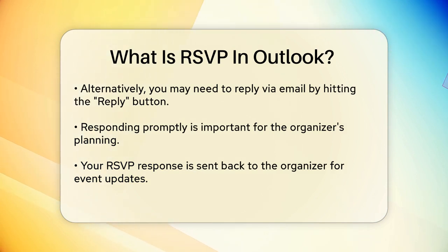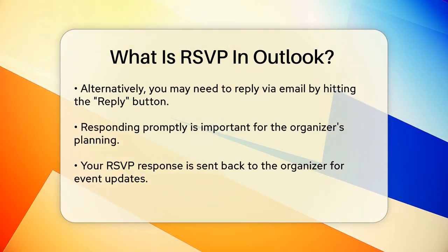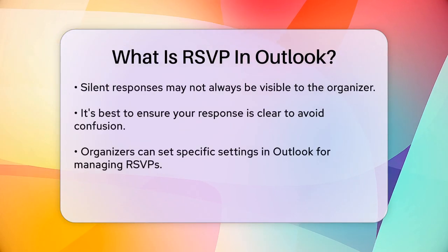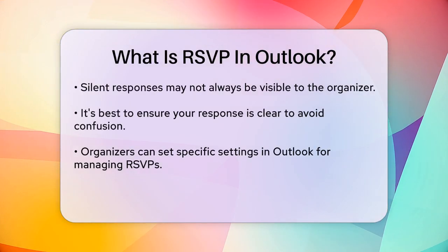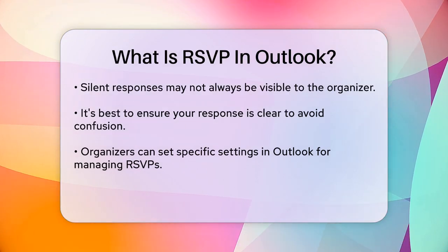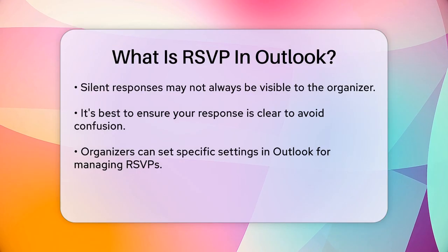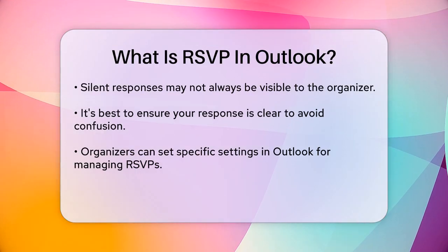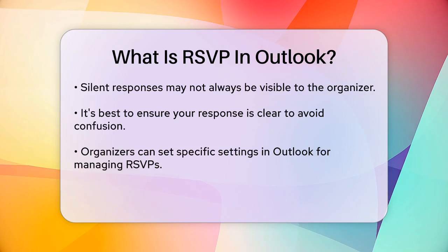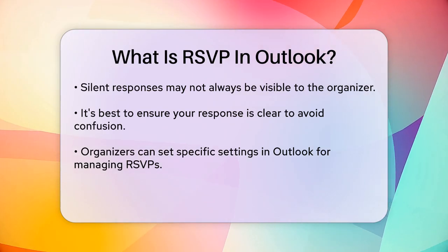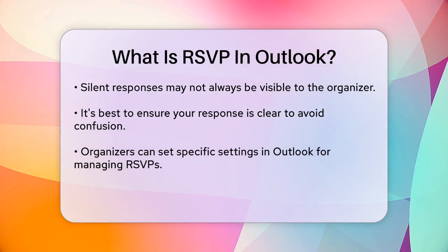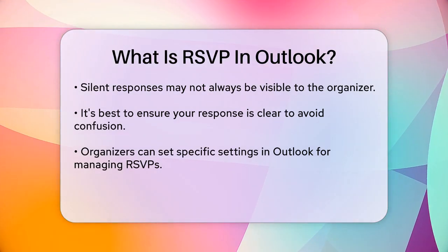In Outlook, the RSVP process is designed to make it easy for both the invitee and the organizer. When you RSVP, your response is typically sent back to the organizer, who can then update the event details to reflect your attendance status. However, there are some nuances to consider. For instance, if you choose to send a silent response — meaning you update your attendance status without sending an email — the organizer might not always see it. To avoid confusion, it's generally best to ensure that your response is visible to the organizer.